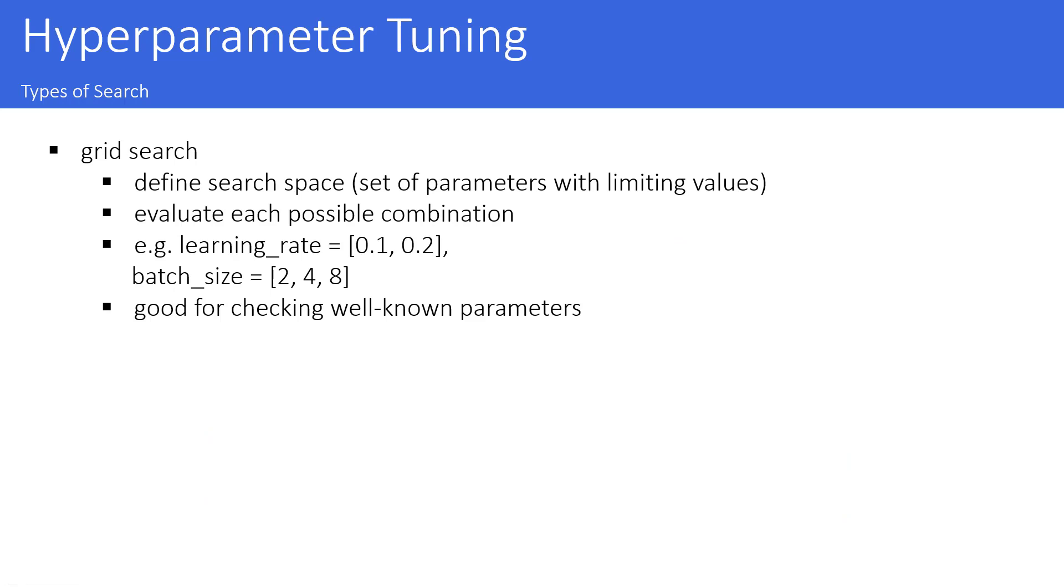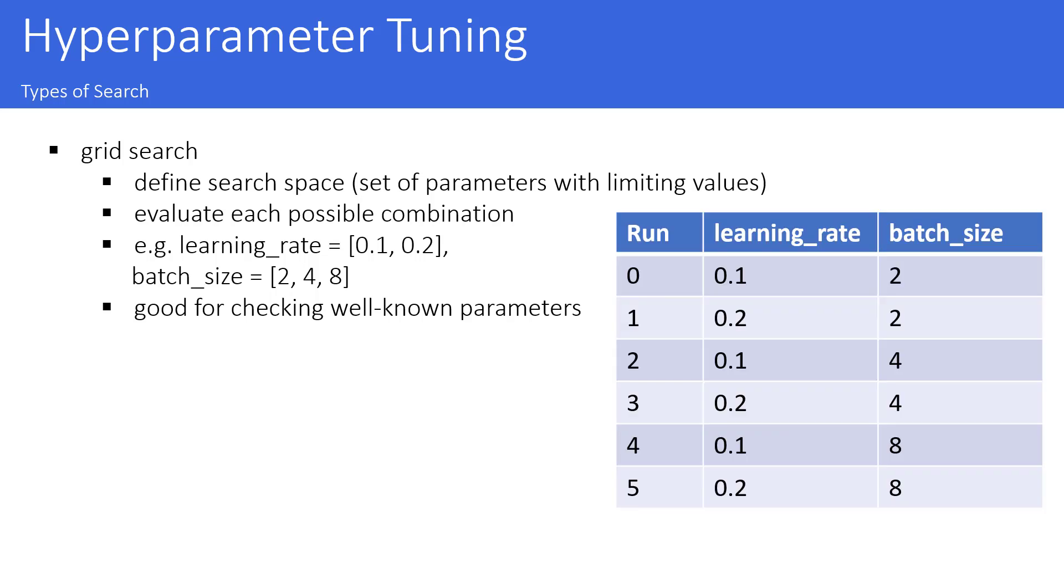How can you actually create some structured search? There are different approaches. The first one is called grid search. In this approach, you need to at first define your search space. You need to define a set of parameters with some limiting values. And then you are basically evaluating all possible combinations. In a case where we are saying we want to make some grid search based on the learning rate and the batch size. Here you can see we have two different values for the learning rate and three for the batch size. Then you can expand the metrics and create all the different runs, basically all possible combinations of both parameters. And this approach of grid search is very well for checking well-known parameters.